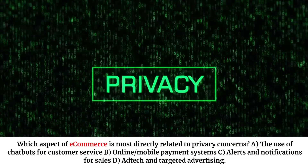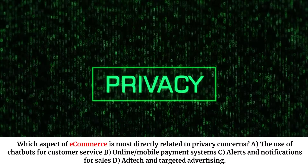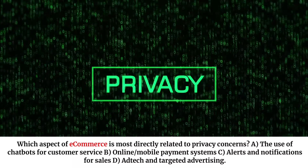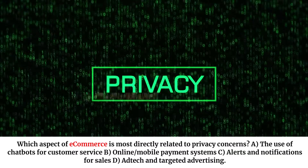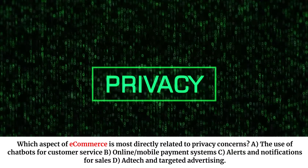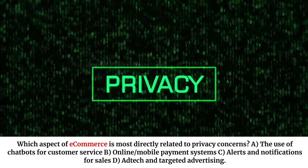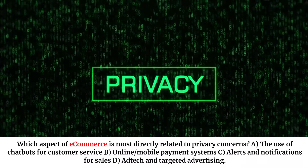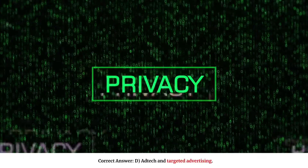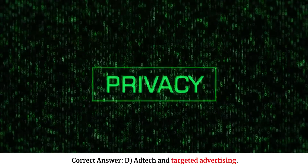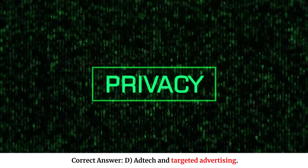Which aspect of e-commerce is most directly related to privacy concerns? A. The use of chatbots for customer service. B. Online mobile payment systems. C. Alerts and notifications for sales. D. Ad tech and targeted advertising. Correct answer: D. Ad tech and targeted advertising.